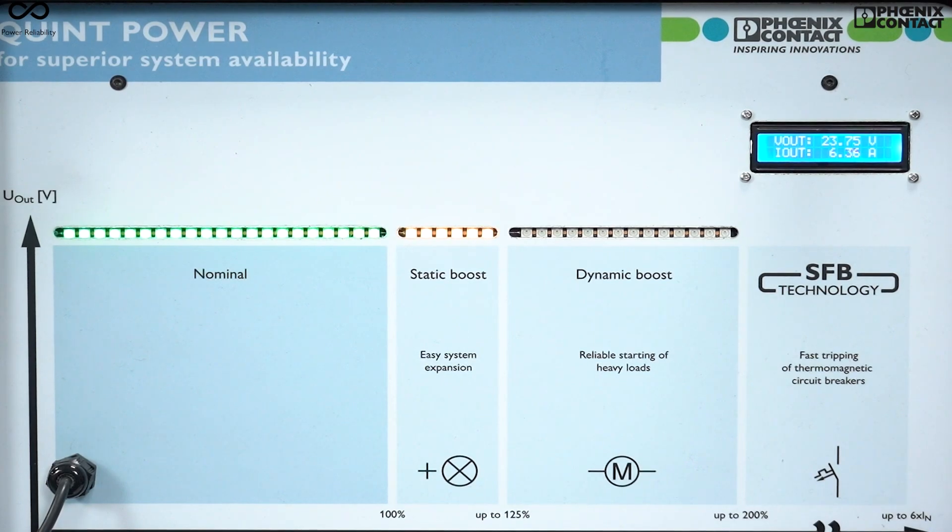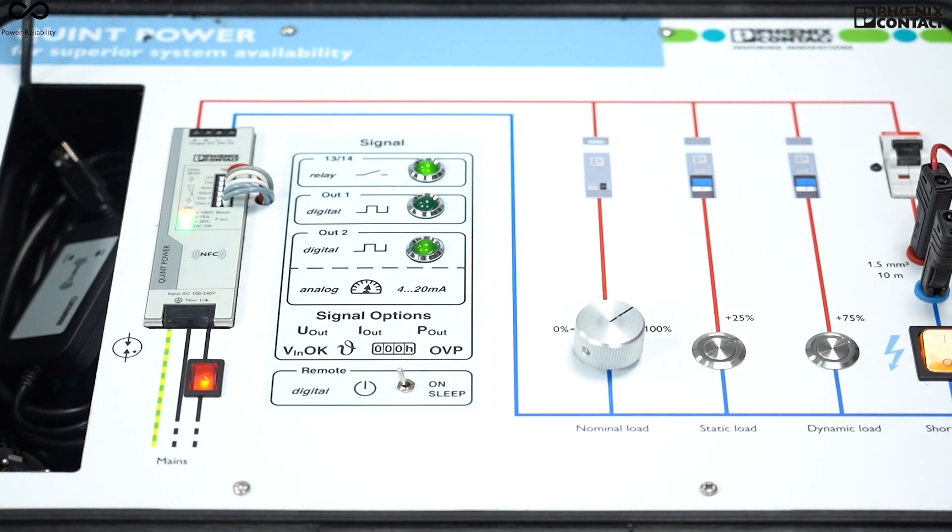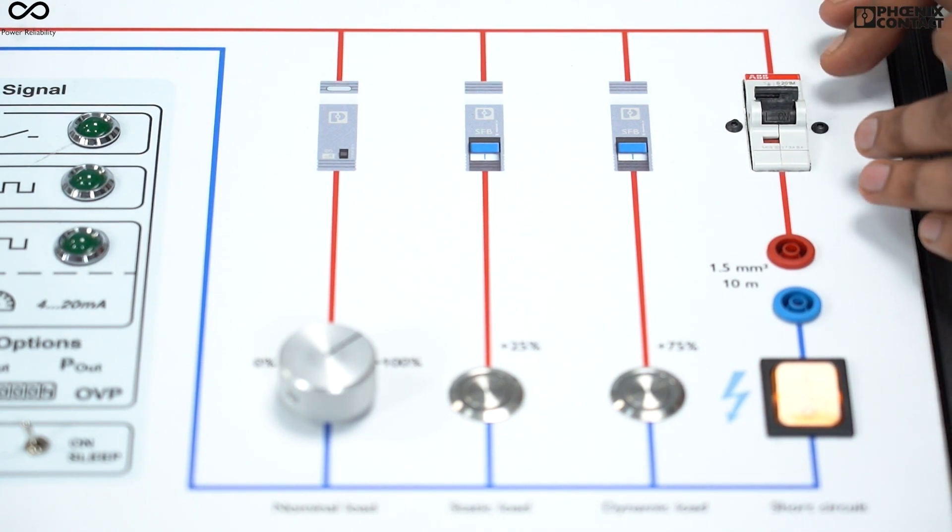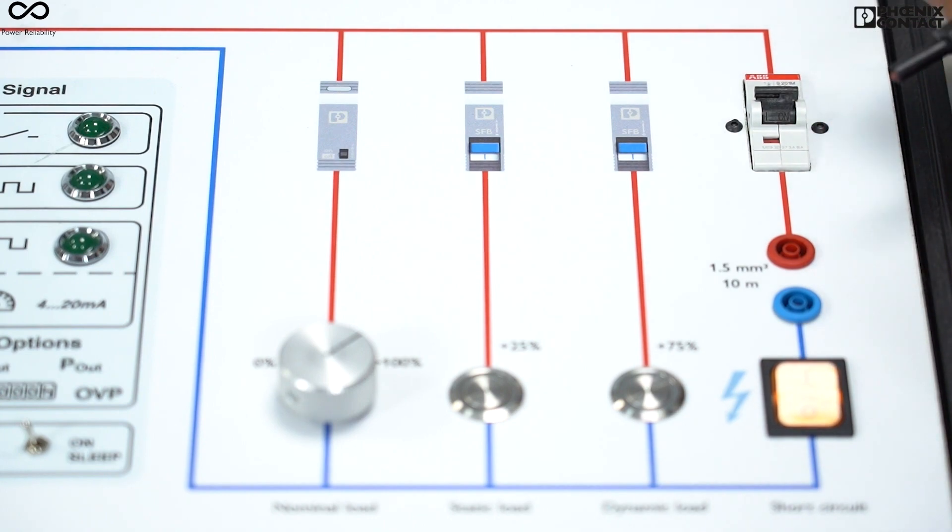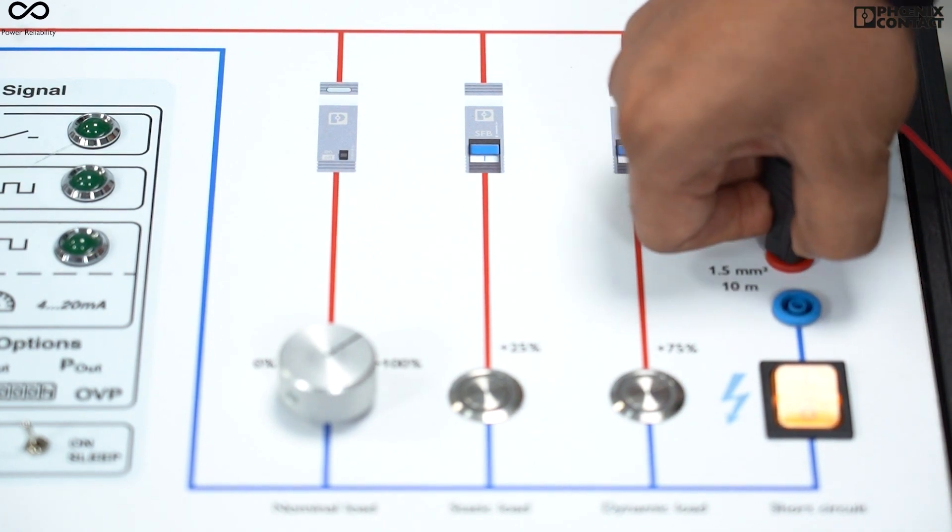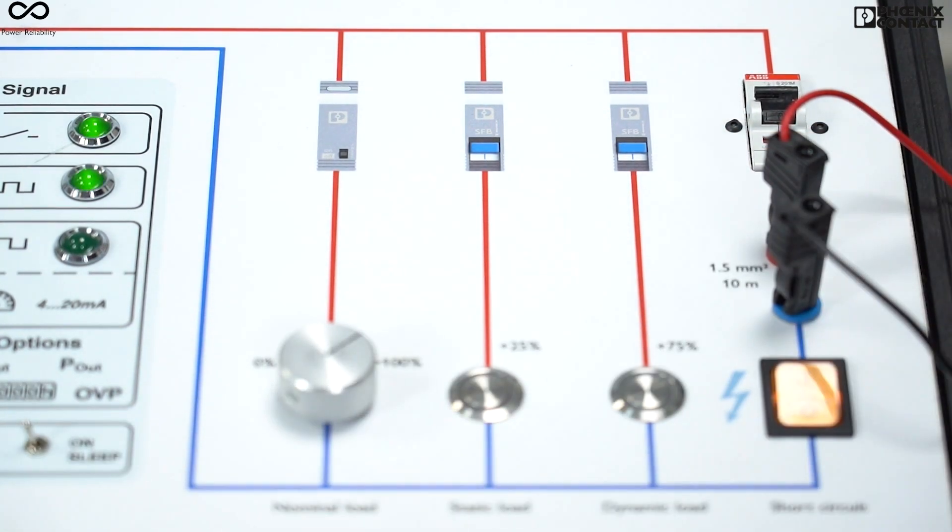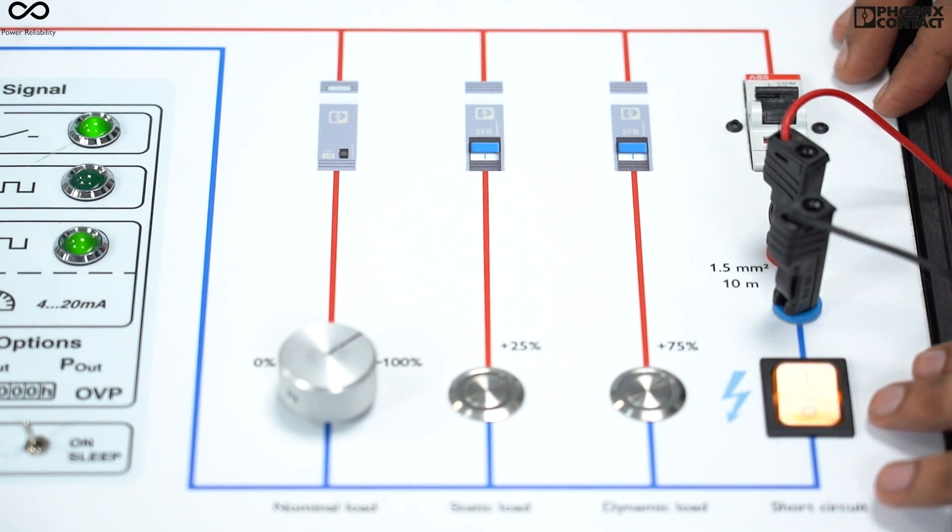Now we'll discuss about the SFB technology. SFB technology is Selective Fuse Breaking technology, and in this feature your faulty path circuit breaker will instantly trip reliably. In this demo case we will make a short circuit condition and it will show you how instantly this circuit breaker will trip.